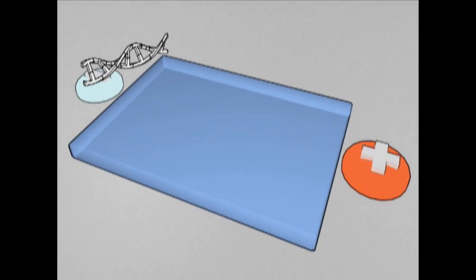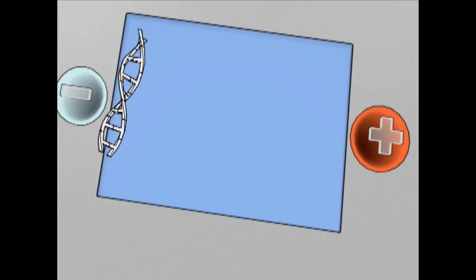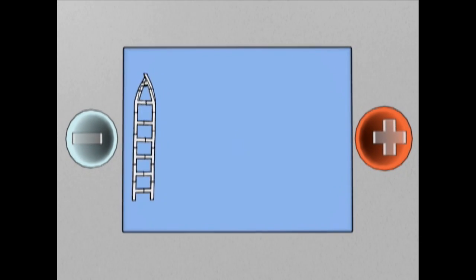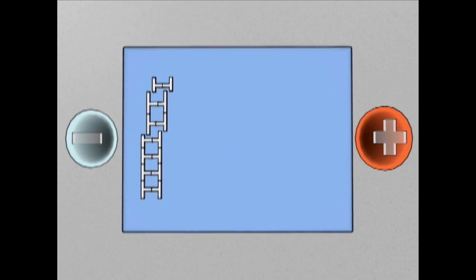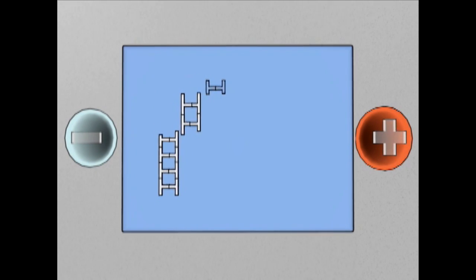DNA molecules have a strong negative charge, so if an electric field is applied to the tray, they will move towards the positive electrode. Agarose gels have microscopic pores, which act as a filter when molecules attempt to move through them. Smaller molecules will move through the gel more quickly than larger molecules.